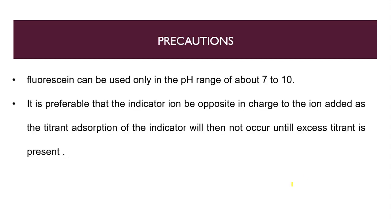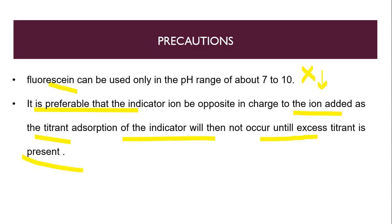Which precautions should we take when performing the Fajan's method? Fluorescein can be used only in the pH range of 7 to 10, because if we use it below pH 7 there will be no color change, due to the acid constant of fluorescein. It is preferable that the indicator ion be opposite in charge to the ion added as the titrant, so that adsorption of the indicator will not occur until excess titrant is present.